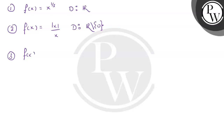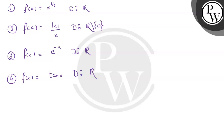The third function is f(x) equals e raised to minus x, and its domain is the set of all real numbers. The fourth function is f(x) equals tan x, and its domain is the set of all real numbers minus the set of elements of the form (2n+1)π/2, where n belongs to the set of integers.